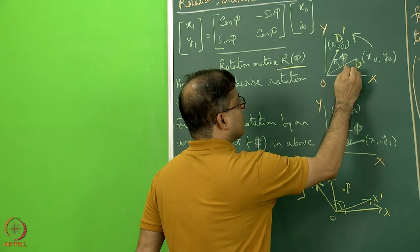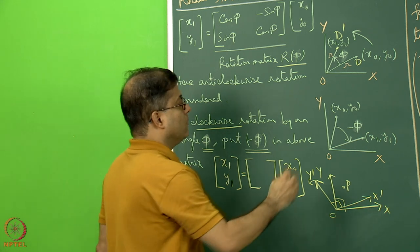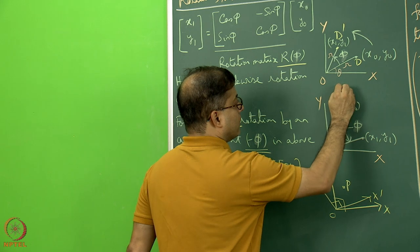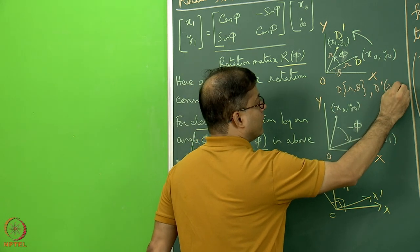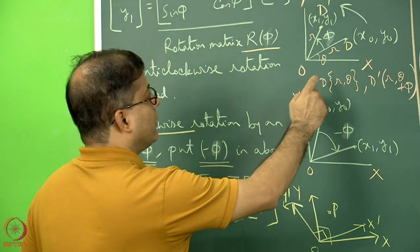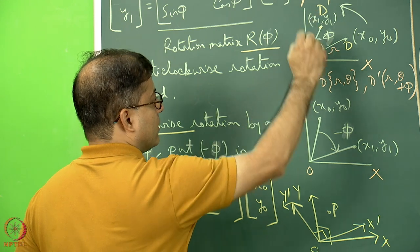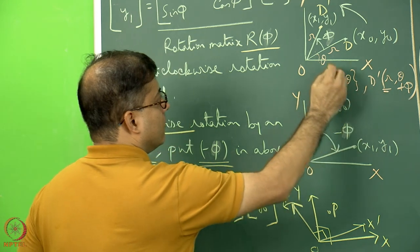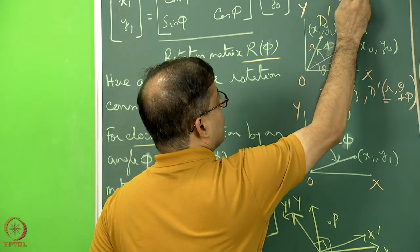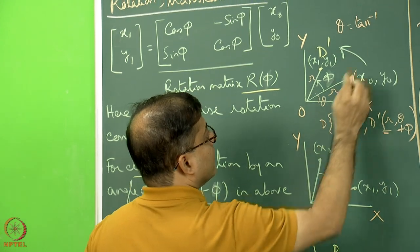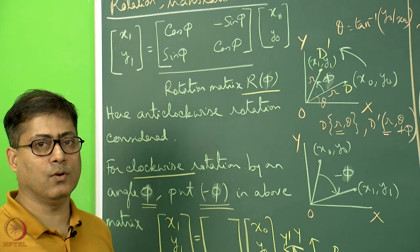A similar presentation can be made using polar coordinates. If OD distance equals r, then OD-dash also equals r, since rotation preserves distance. If the initial angle was theta, point D is represented as (r, theta) and D-dash as (r, theta + phi). You can also obtain theta = tan⁻¹(y0/x0). This rotation matrix can be written in the r-theta coordinate system as well.